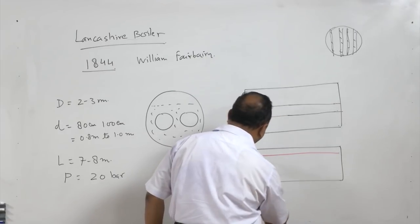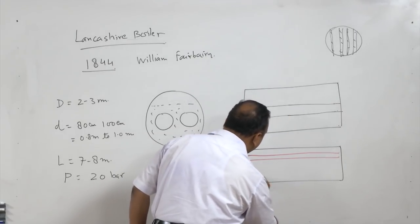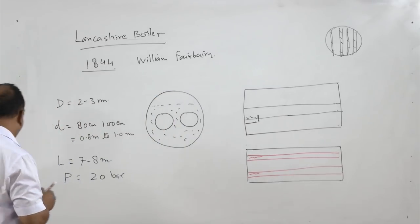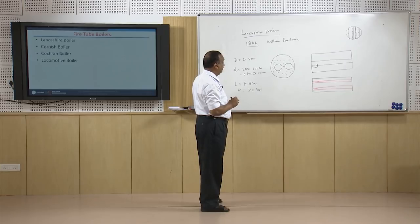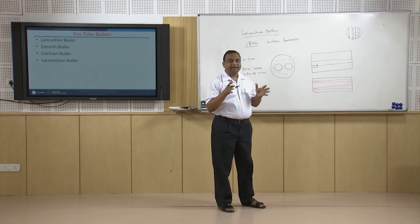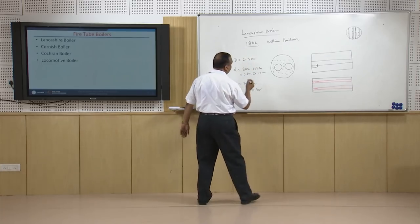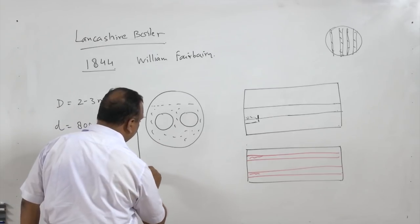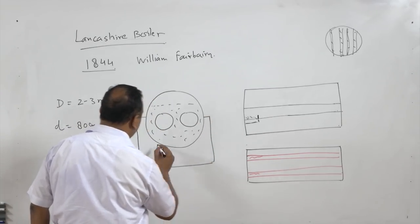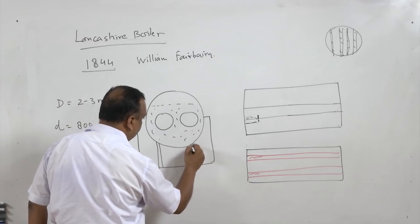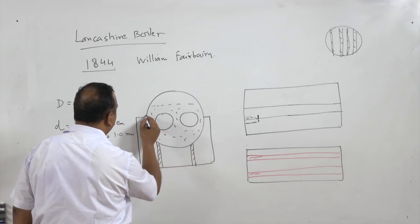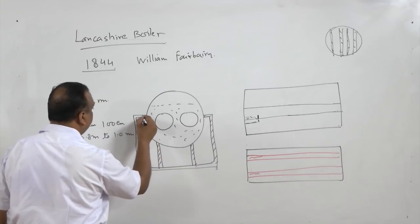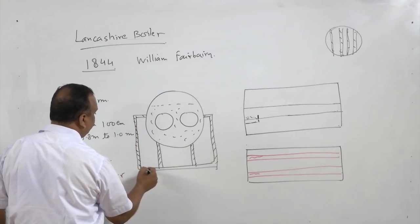Two different fire tubes are available and the flue gases flow inside these tubes. This boiler is placed in a refractory — there is masonry work around the boiler. This is all brick work; these are refractory bricks.